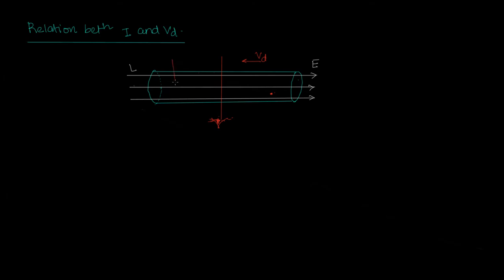Let's see what happens after time delta t. I have assumed — though that is not really the case — that all the electrons are moving to the left without collision with a velocity equal to vd. So in a time delta t, whatever has crossed here would have reached here, starting from t equal to 0, at a distance of vd·delta t.